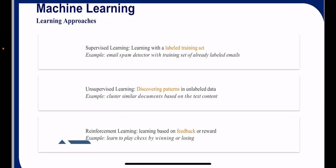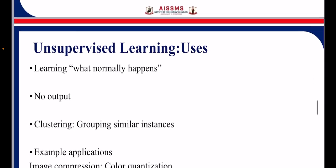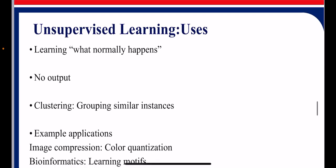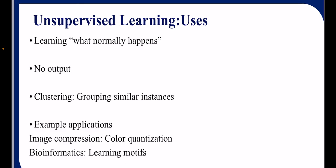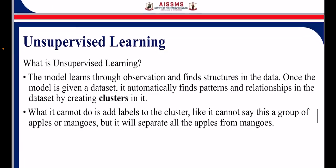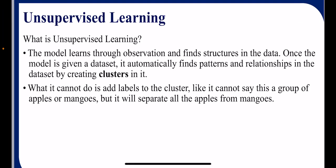In unsupervised learning, the machine learning model discovers patterns on its own. We use unsupervised learning when we are not sure about the output — the model clusters data from its own point of view. We are not controlling how it clusters the data. The model learns through observation, finds structure in the data, and automatically finds patterns and relationships by creating clusters.